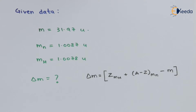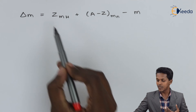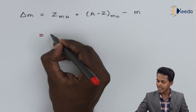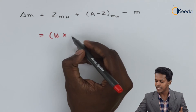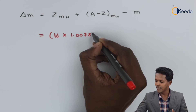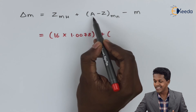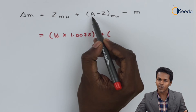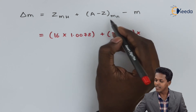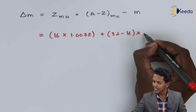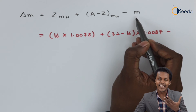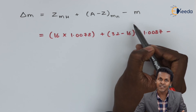Let us substitute the values. For sulfur, the atomic number Z is 16, so we have 16 × 1.0078 unified mass units, plus (32 − 16) × 1.0087, minus the observed atomic mass for sulfur which is 31.97 units.